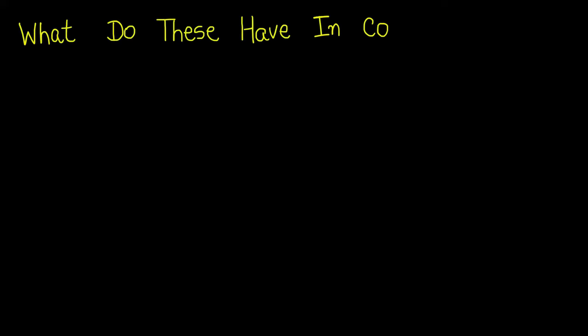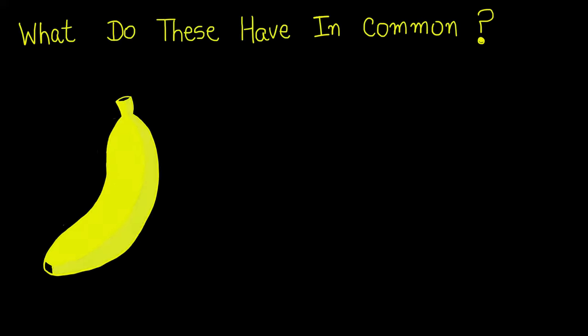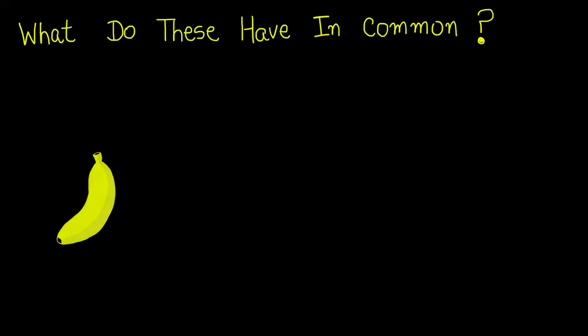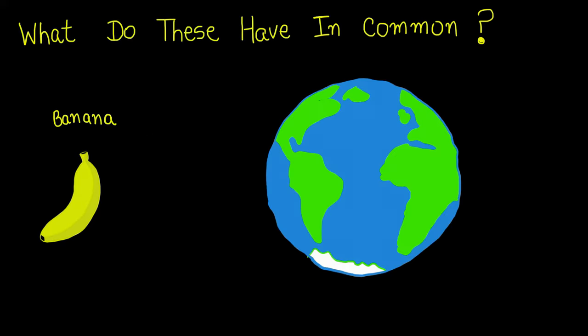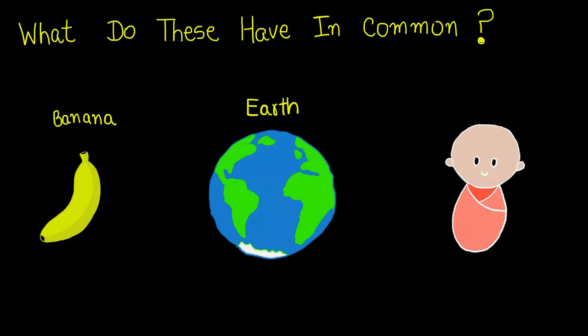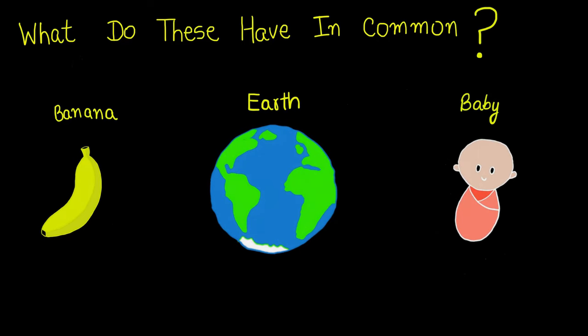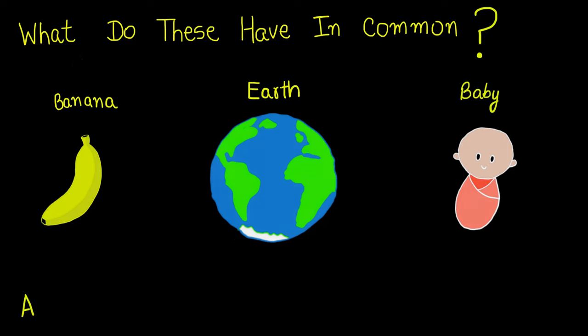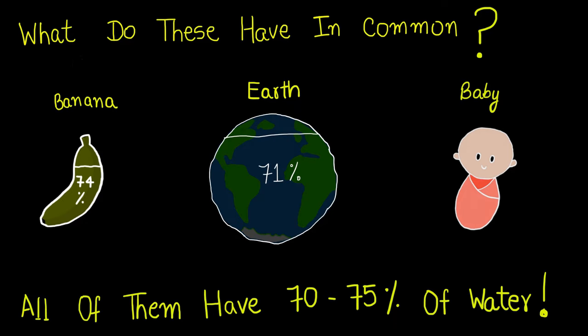What do these three things have in common: a banana, the Earth, and a baby? Take a moment to pause and think. All of these have seventy to seventy-five percent water.